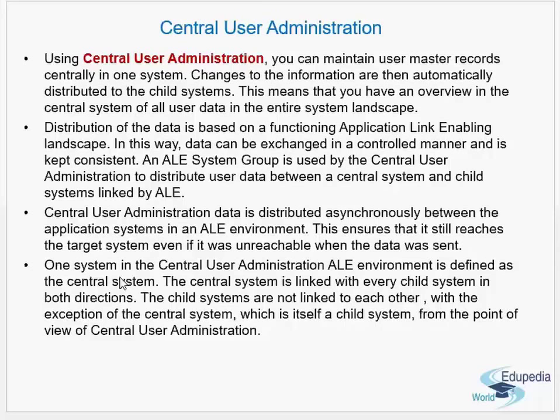The data is released from the source system. At the moment it is released, it might not reach the target due to reasons like a network issue, but the system makes sure the data is eventually transmitted to the target system. In ALE, data is distributed asynchronously from the central system to the child system.